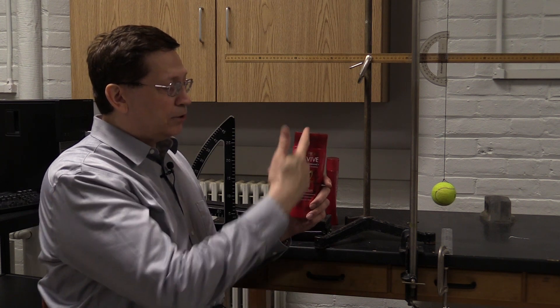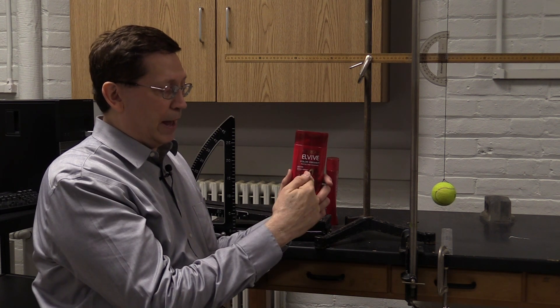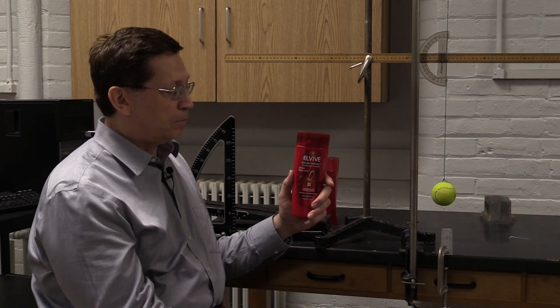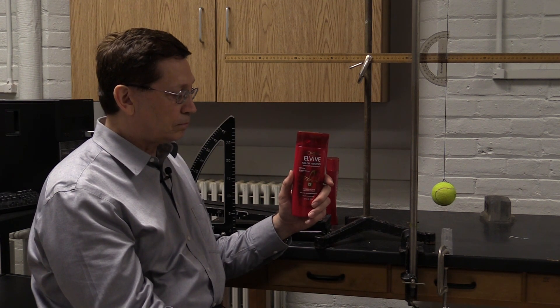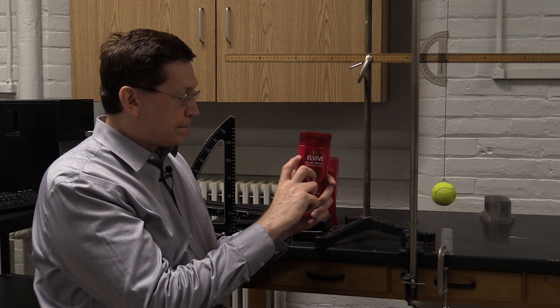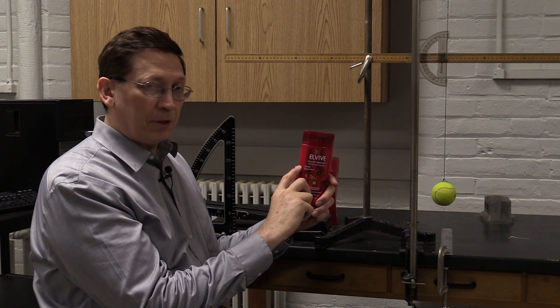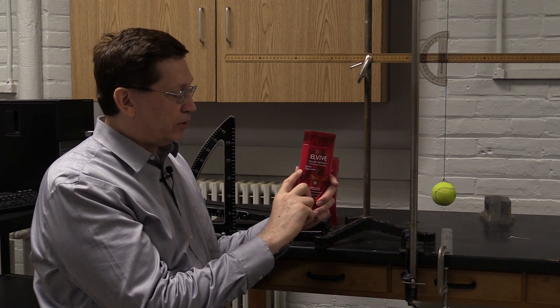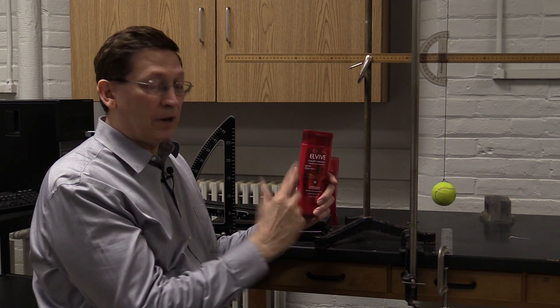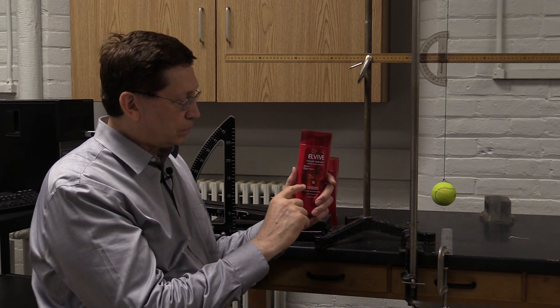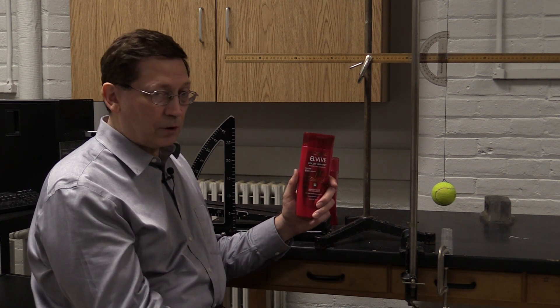When the bottle starts out full, the center of mass is about where the center of the liquid is, which is pretty high in this bottle. As we use up the liquid, the center of mass becomes lower and lower. And that helps the bottle become more stable and more difficult to tip over.